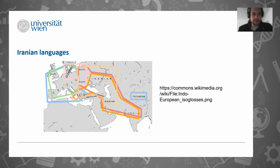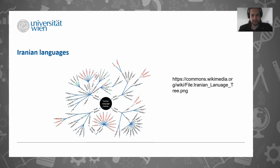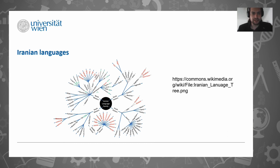This map shows that Iranian languages, including the ancestors of Ossetic, were spoken in the Eastern European steppe. And here is a family tree of Iranian languages, which mainly shows that there are a lot of them - Ossetic being here in the eastern branch of the family, with Ossetic and Alanik listed separately.